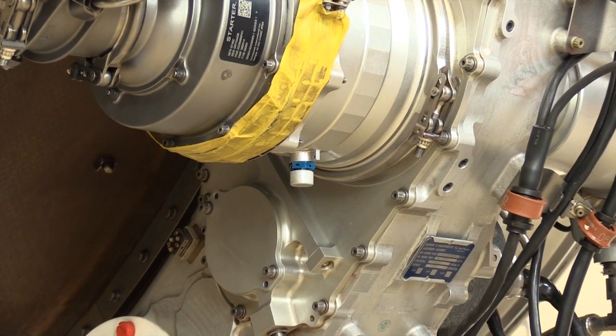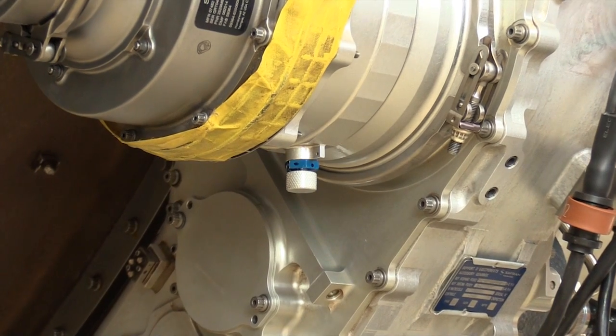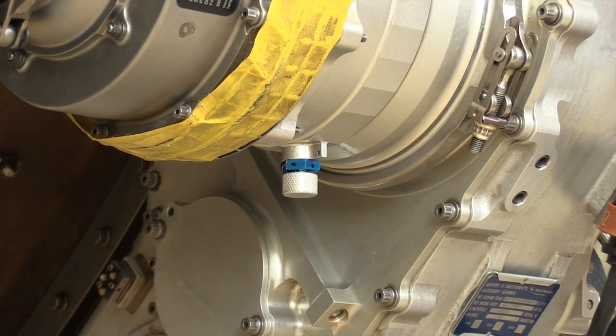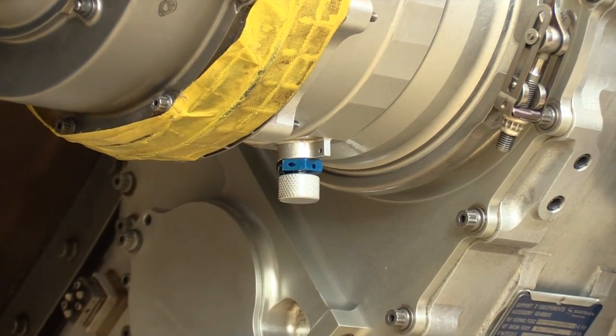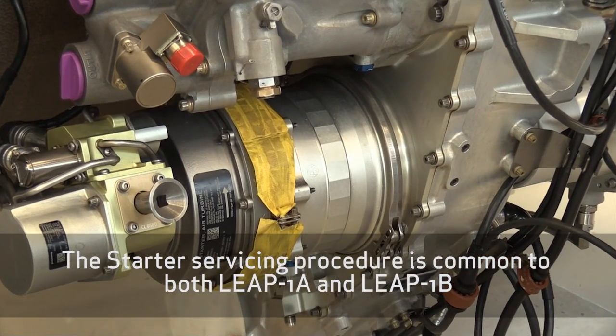The pneumatic air starter is lubricated with engine oil to prevent damage to its internal components. While the pneumatic air starter shares oil with the engine, it does require a pre-service amount of oil to ensure that there is adequate lubrication the first time the engine is rotated.